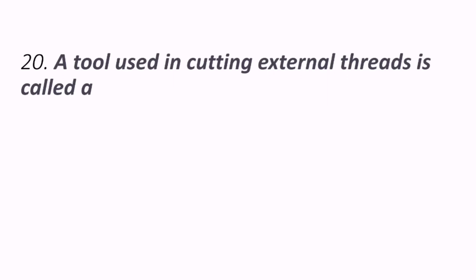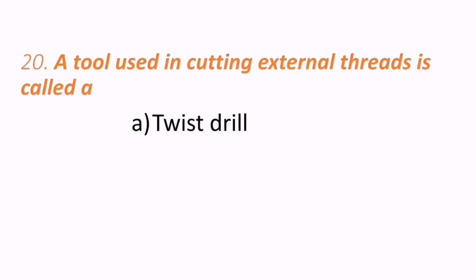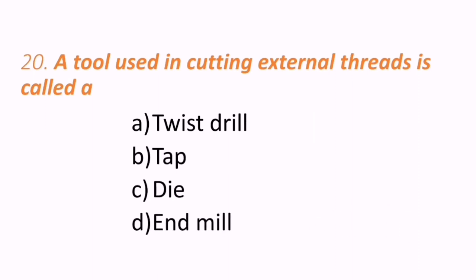Twentieth question: a tool used in cutting external threads is called what? Options are twist drill, tap, die set, or end mill. The correct answer is die — dies are used for cutting external threads.